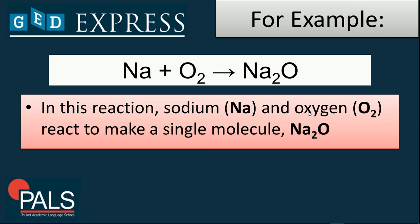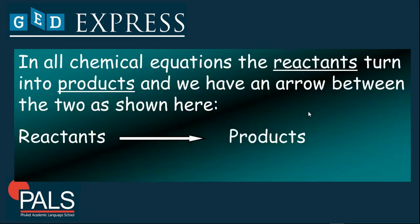In this case, sodium and oxygen are the reactants, and they react together to make a single molecule known as Na2O, sodium oxide. In all chemical equations, the reactant turns into product, and we have an arrow between the two. The one on your left is known as the reactant, and the one on your right is known as the product or the products.